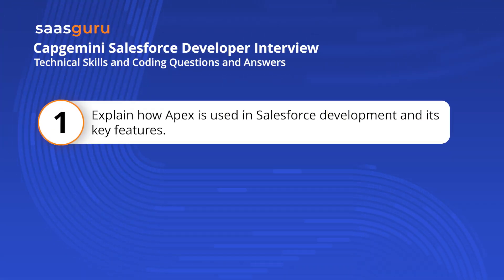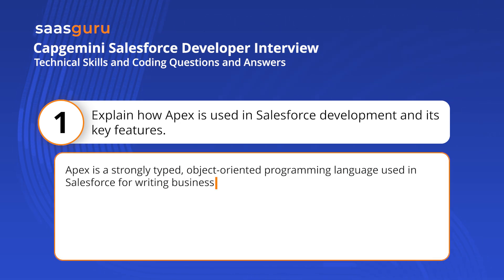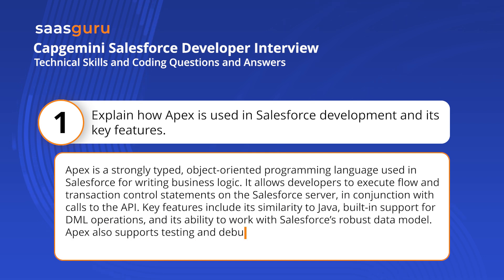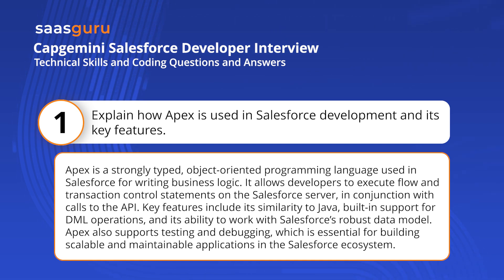Explain how Apex is used in Salesforce development and its key features. Apex is a strongly typed, object-oriented programming language used in Salesforce for writing business logic. It allows developers to execute flow and transaction control statements on the Salesforce server, in conjunction with calls to the API.